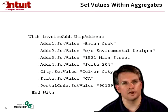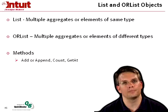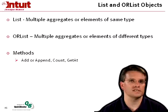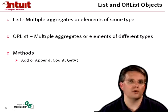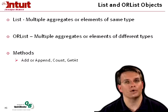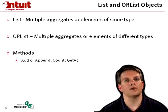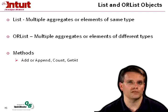Lists and Or lists are very interesting. They're unique to QBFC. A list is multiple aggregates or elements of the same type. For example, in a customer query, I can provide a list of list IDs that I want back, or a list of full names that I want to query for in a single customer query request. That's represented by a list ID list or a full name list within QBFC.